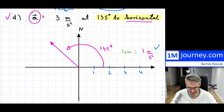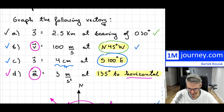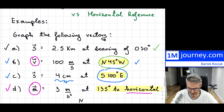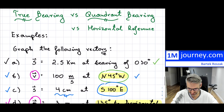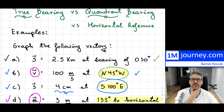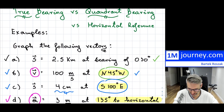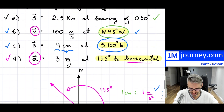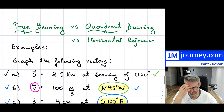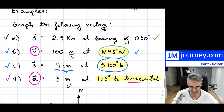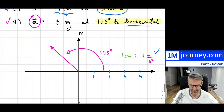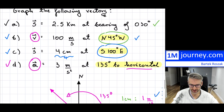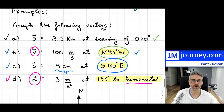So that's how you can actually graph your various vectors if you're going to be doing a geometric vector graphing with respect to some kind of a reference — so either a true bearing, quadrant bearing, or horizontal reference. I hope this gives you some kind of an idea on how to approach these.